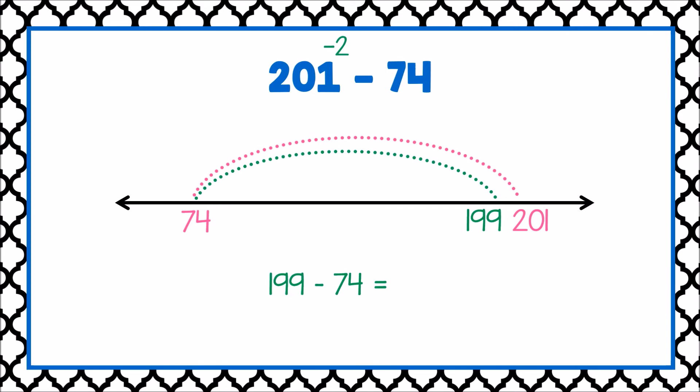Now that's much easier. I can do that mentally. The answer is 125. Uh-oh, I subtracted two too many. I subtracted two from 201 before subtracting the 74.